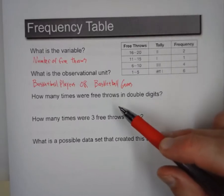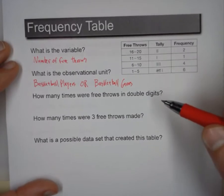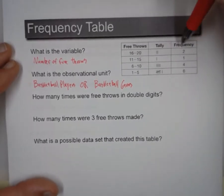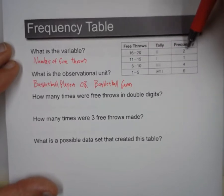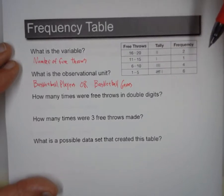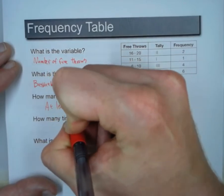Now this question: How many times were free throws in double digits? So that means we go from 10 and up. Now this counts 11 to 15, this counts 16 to 20. The problem is 10 is here, and we don't know how many are down here. So all we can say is at least 3.